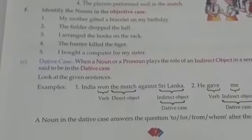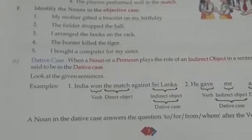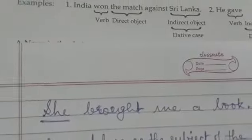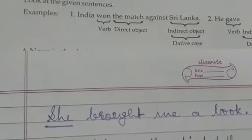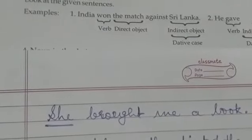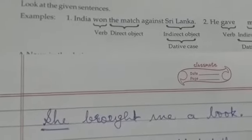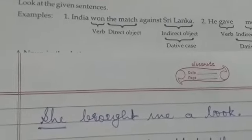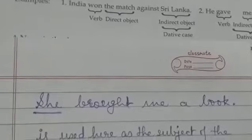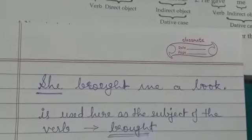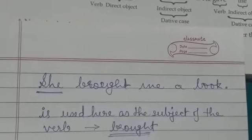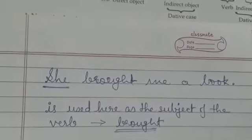Let's take a simple sentence: 'She brought me a book.' Now let us analyze this sentence. In this sentence, we can find out a subject, a verb, and an object. She is used as the subject of the verb 'brought.'